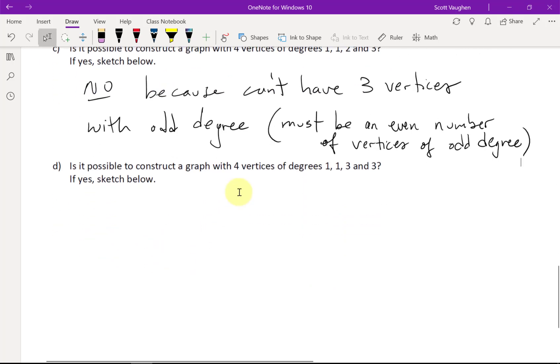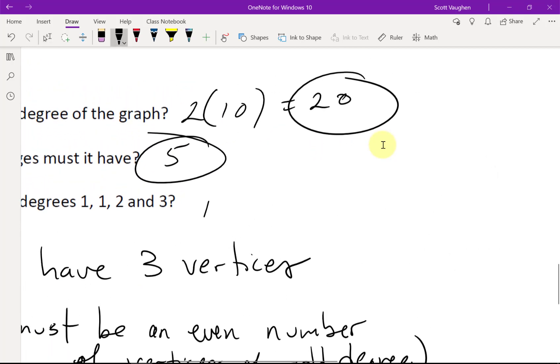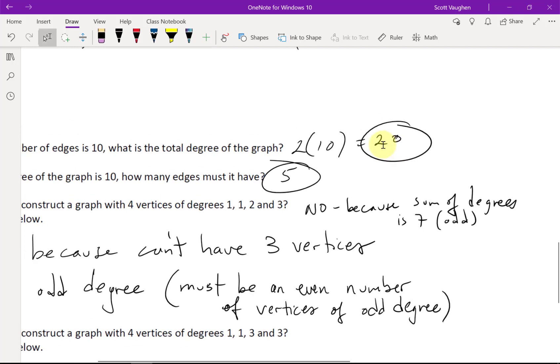So, is it possible to construct a graph with 4 vertices of degrees 1, 1, 3, and 3? Oh, there's one other thing I could have said about this. Part C. If you just add up the total sum. 1 plus 1, that's 2, plus 2 more, that's 4, plus 3, that's 7. So, you could also say another answer here. You could say no because sum of degrees is odd. And the sum of all the degrees has to be even.